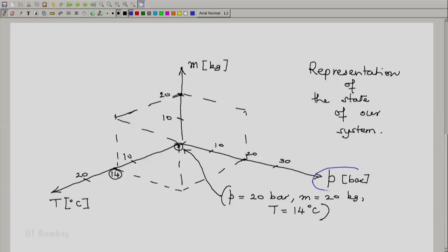Pressure is represented on one axis, mass is represented on another axis, and temperature is represented on the third axis. Each coordinate represents a property, and each property is represented by a coordinate.